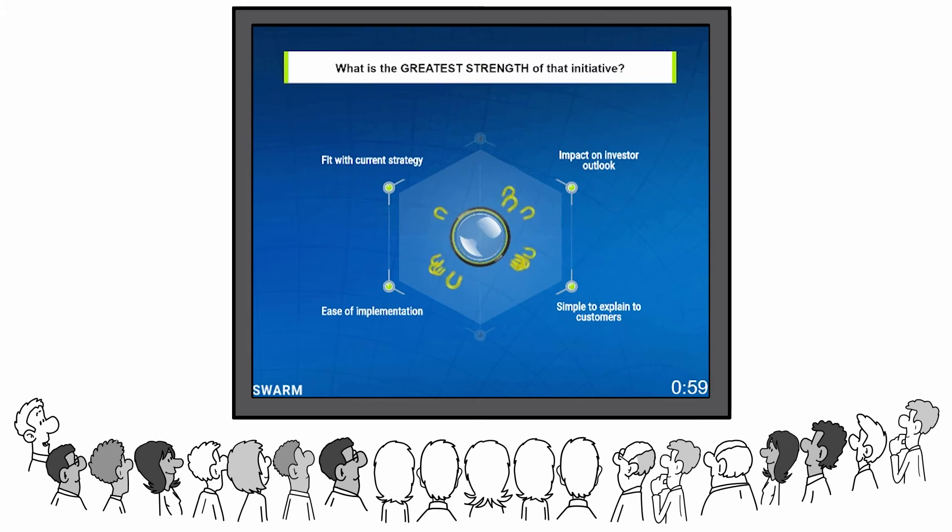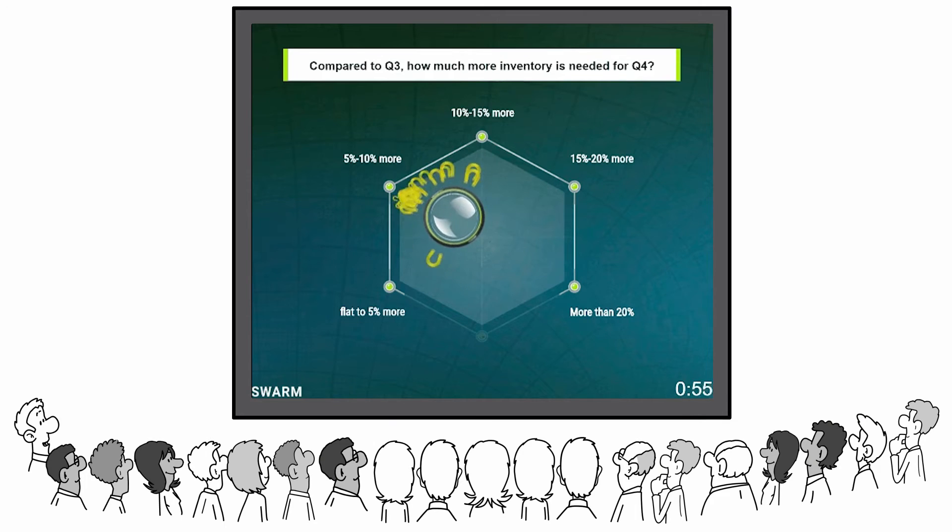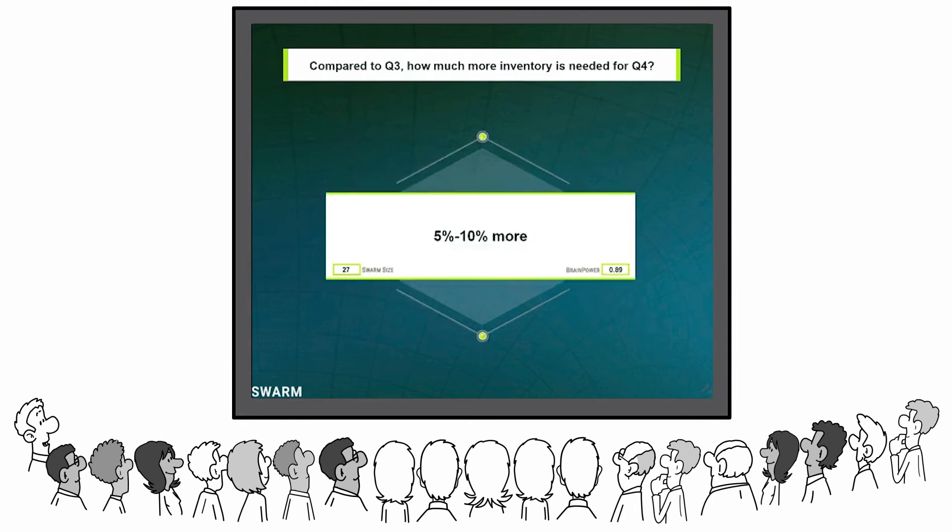And instead of choosing lunch, they were deliberating which product features would perform the best in the market, or which marketing strategy would give the largest return. All kinds of organizations, both large and small, have used Swarm to make better decisions.